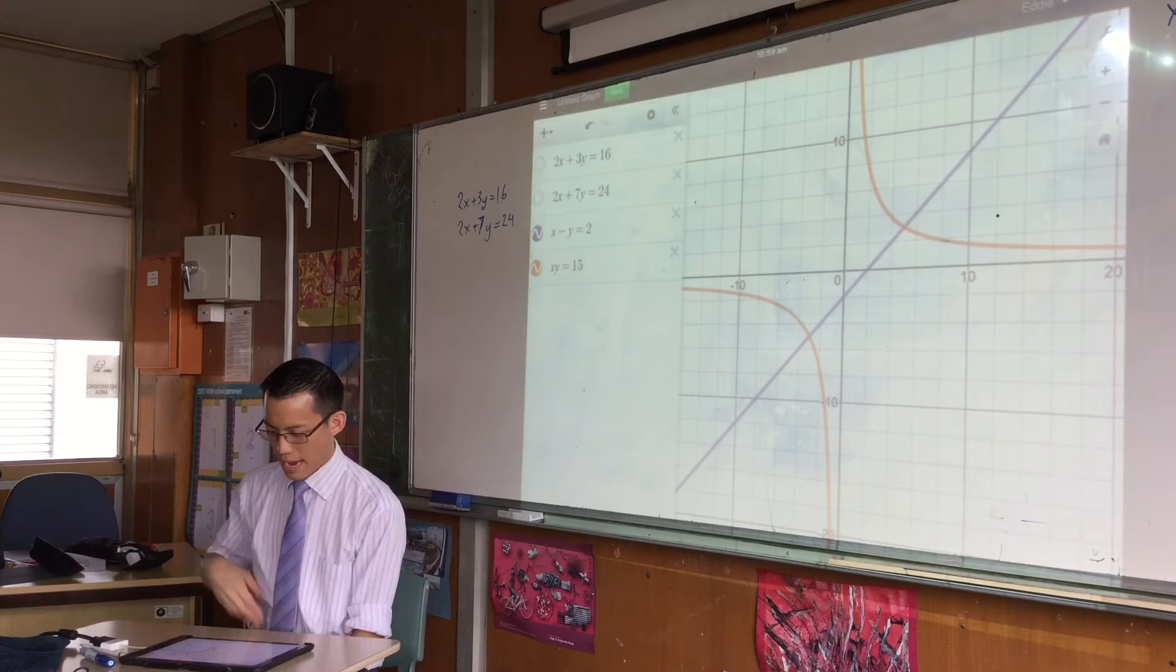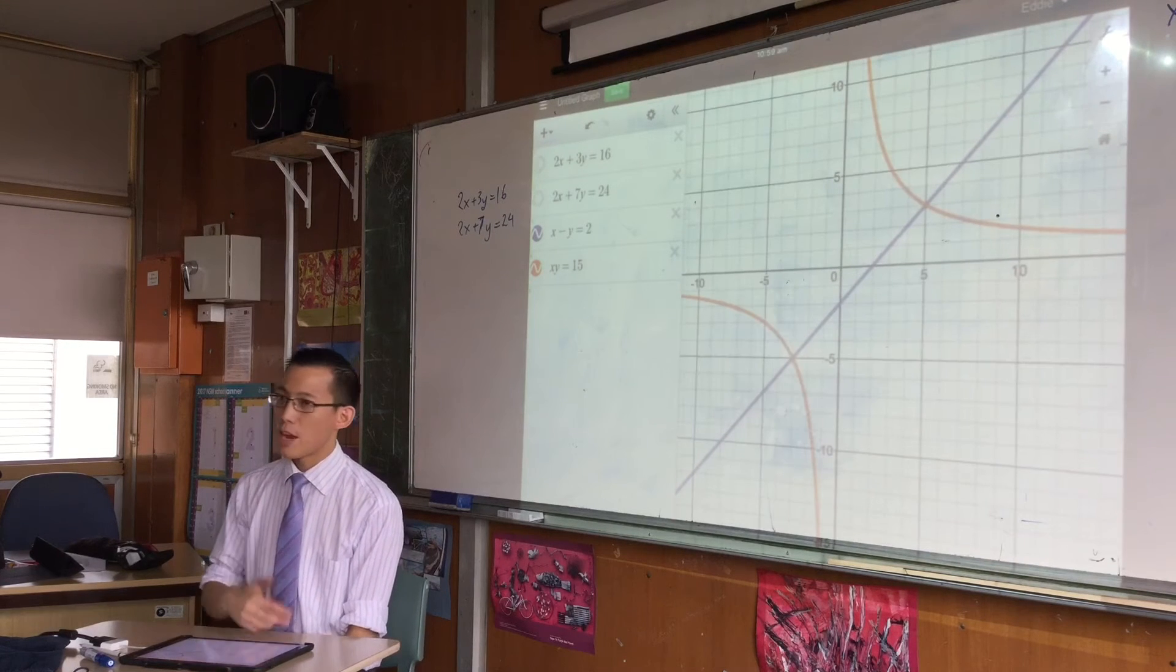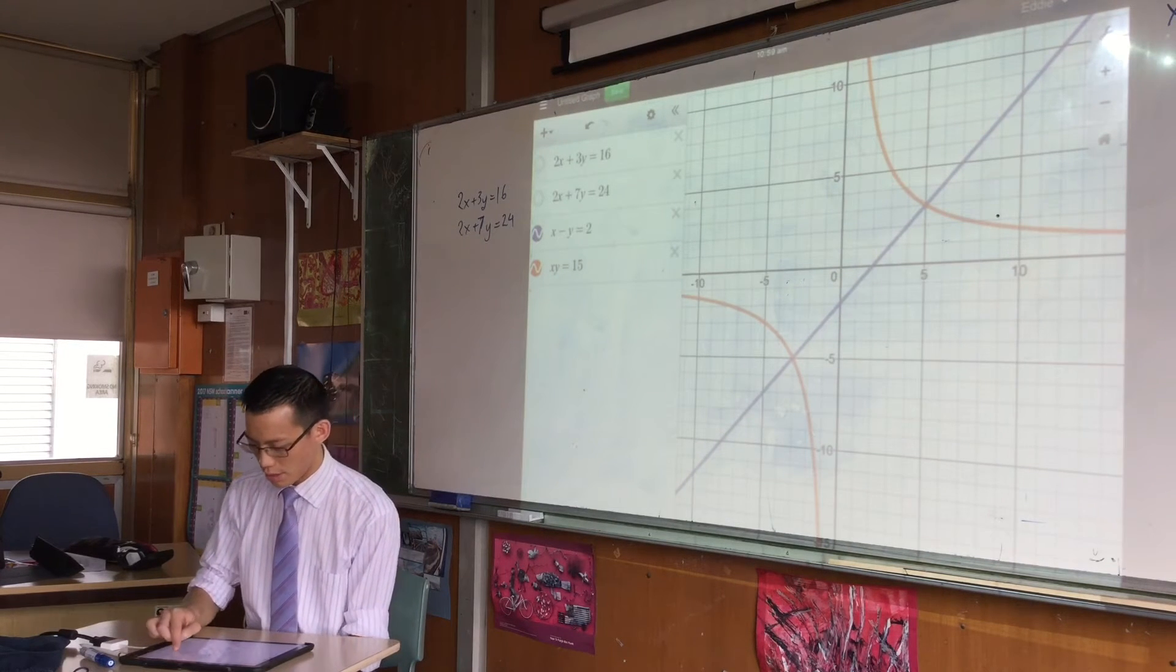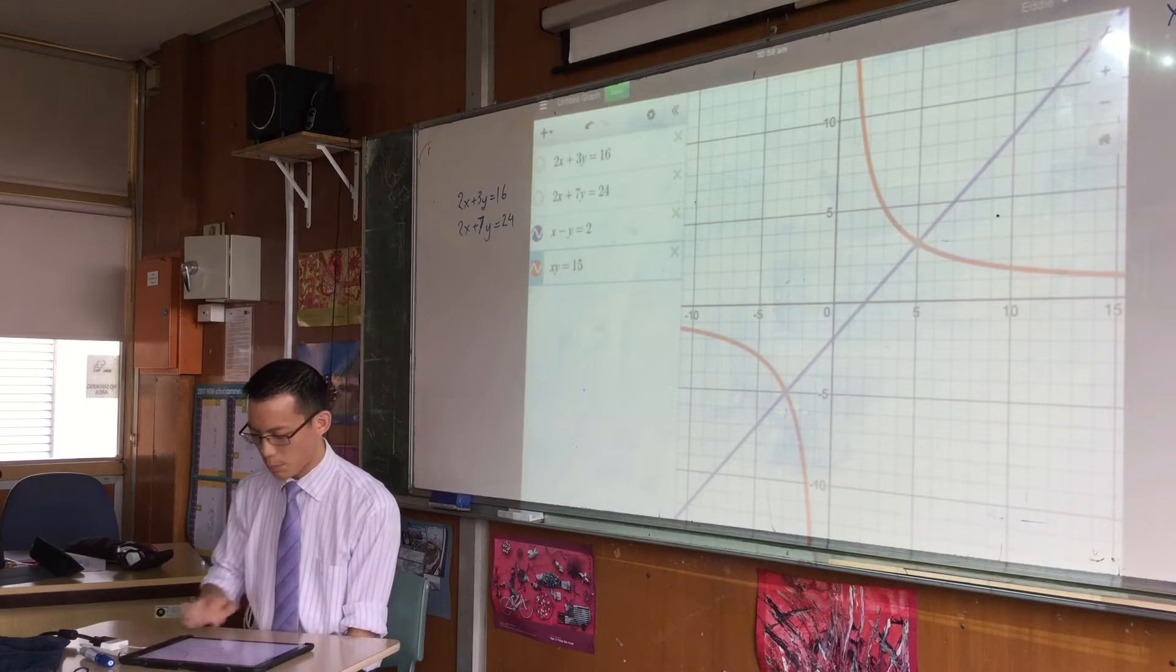When you have a look at this, you can zoom and you can pan and do whatever you like. There isn't just one solution. Let's see if you click on one of those points of intersection, it will actually give you the coordinates.